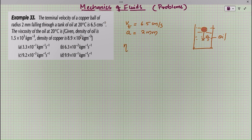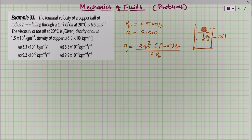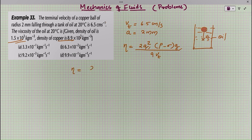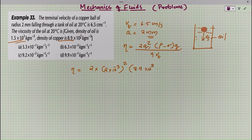We have to find the coefficient of viscosity of the oil. We use the equation: eta = 2a² (rho minus sigma) g / 9 vt. Here vt is the terminal velocity, 'a' is the radius of the copper ball, rho and sigma are the densities of copper and oil respectively, and g is the gravitational constant. Substituting: 2 × (2 × 10⁻³)² × (8.9 × 10³ − 1.5 × 10³) × 9.8 / (9 × 6.5 × 10⁻²).